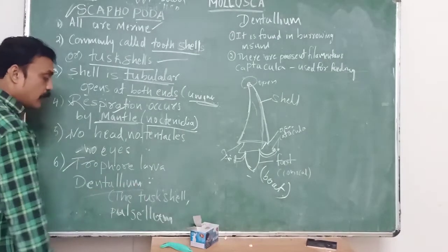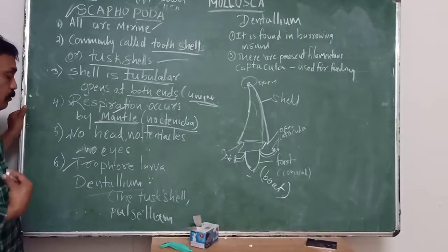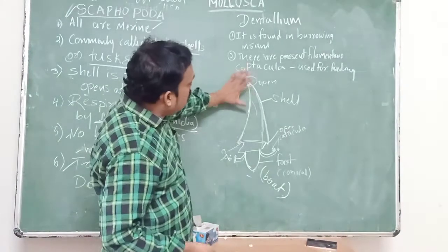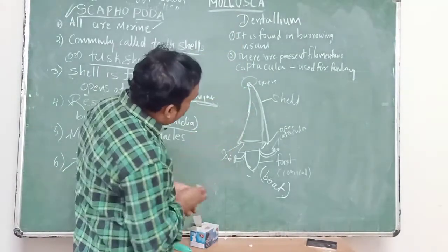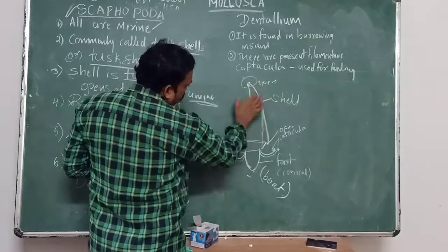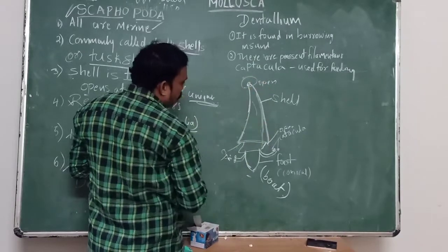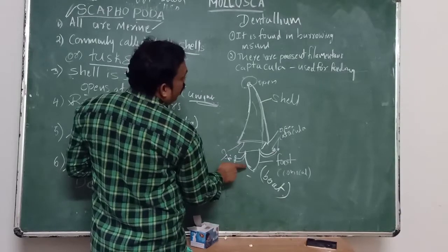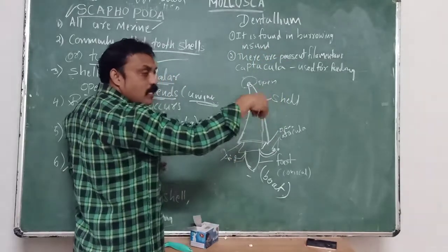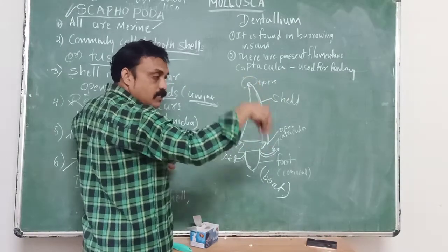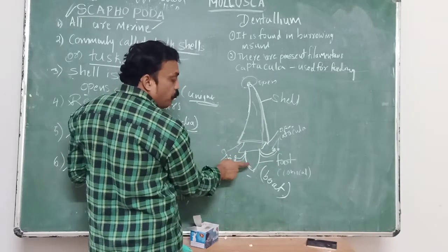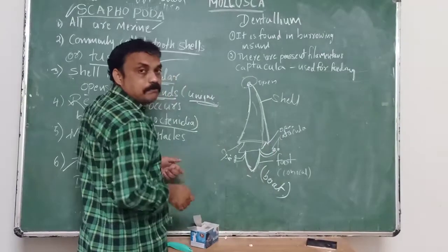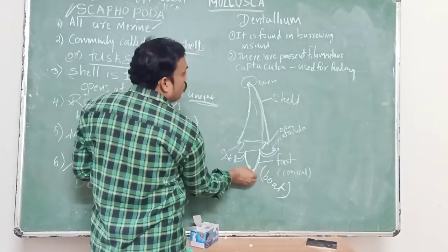The example is Dentalium, also called the tusk shell. Observing this diagram of Dentalium, the shell is tubular and opens at both ends. Dentalium is found burrowing in sand near water — it digs using its conical, board-shaped foot. The conical foot is useful for digging into the sand.